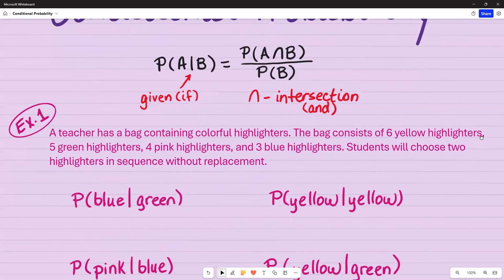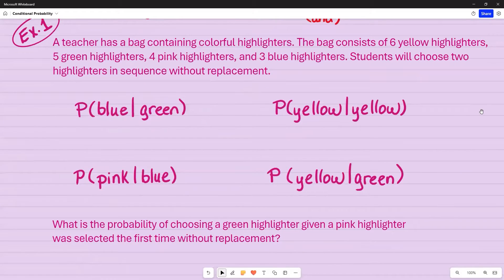For this first example, a teacher has a bag containing colorful highlighters. The bag consists of six yellow highlighters, five green highlighters, four pink highlighters, and three blue highlighters. Students will choose two highlighters in sequence without replacement.